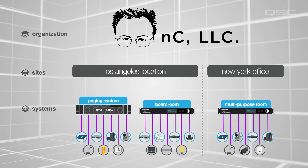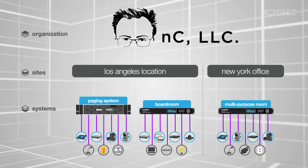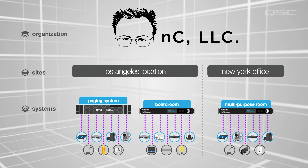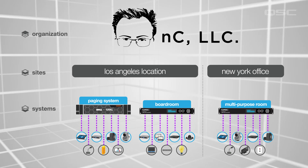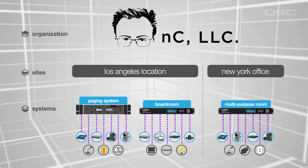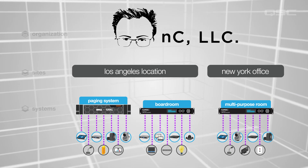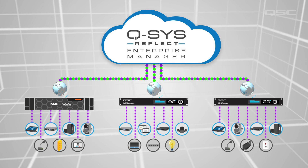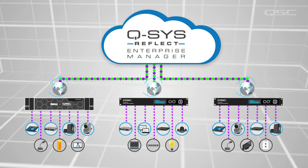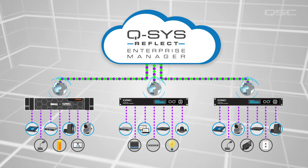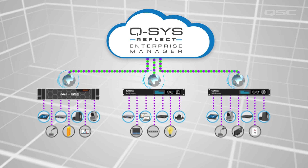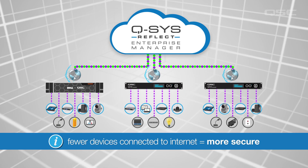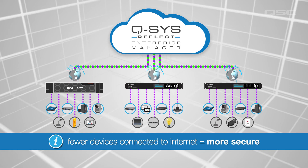Every core automatically acts as a system-level aggregator for data from its own peripherals. This means that when it comes to connecting all of this to the Reflect Cloud, the only device that requires an internet connection is the Q-SYS Core. There are no extraneous links between your individual peripheral devices and the cloud. This is great because fewer device connections to the internet means increased system security for your installation.